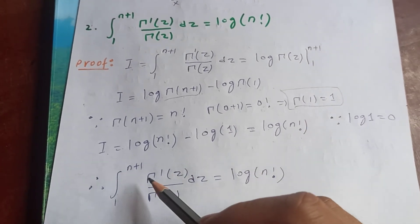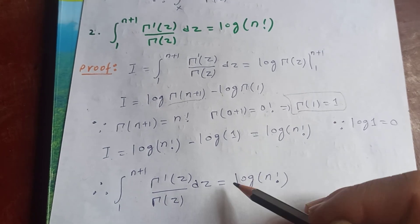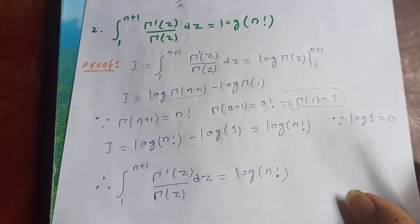Therefore our integral from 1 to n plus 1 of gamma prime of z upon gamma z dz is log of n factorial.